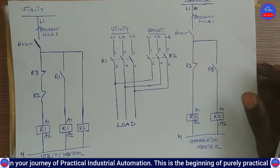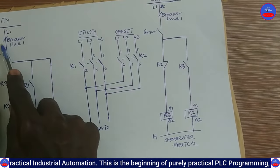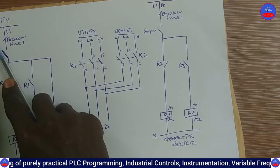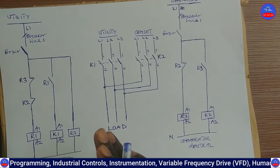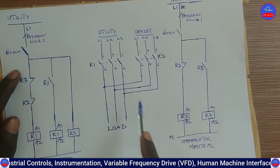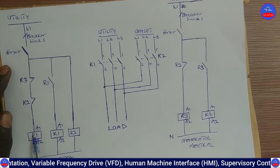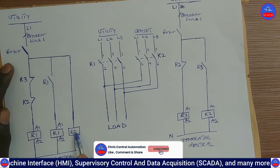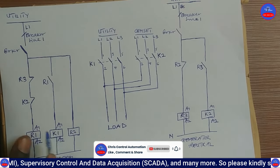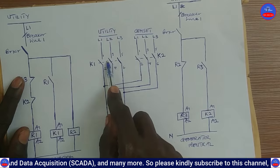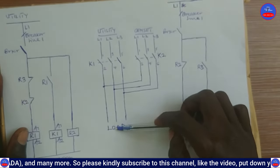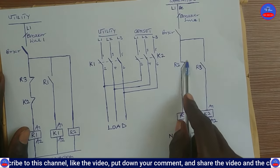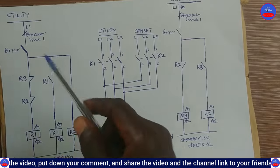Now, assuming the utility power line goes off — meaning we open this breaker — the utility power will go off. The moment it goes off, R1, K1, and R2 all de-energize. When K1 de-energizes, its contacts open and the utility power is cut off. When R2 also de-energizes, its contact closes back, ready for the generator side to operate.